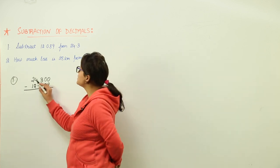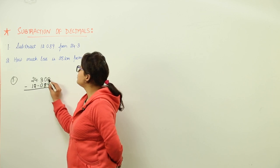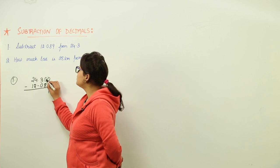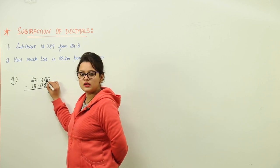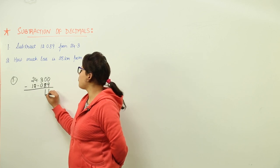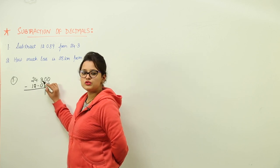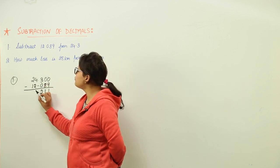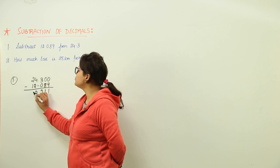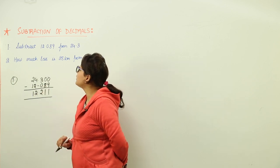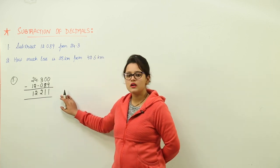Now can we subtract? Yes. Now take a carry from 3. This becomes 10. 10 minus 9 is 1. Here we had taken a carry and taken another carry, so this becomes 9. 9 minus 8 is 1. Here we were left with 2, so 2 minus 0 is 2. 4 minus 2 is 2. 2 minus 1 is 1. So 12.211 is the subtracted answer.